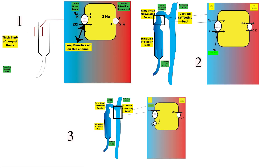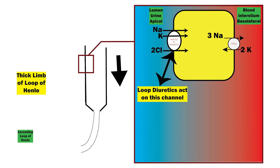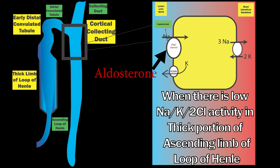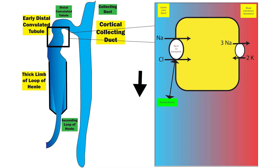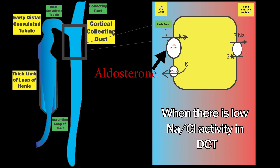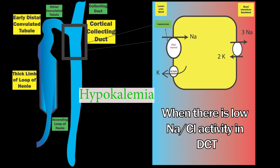Now consider if one of these channels doesn't work or overworks, then others must compensate. For example, when there is low NaK2Cl activity in the thick ascending limb of Henle, ENaC will move more sodium into the blood under the action of aldosterone, ROMK will excrete more potassium into the urine, and more potassium goes out — resulting in hypokalemia. Similarly, when there is low NaCl activity in the distal convoluted tubule, ENaC in the cortical collecting duct will move more sodium into the blood under aldosterone, ROMK will excrete more potassium, and there is hypokalemia.